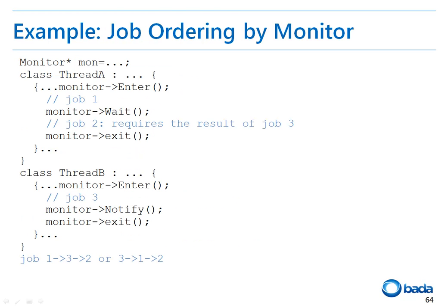This example shows you how to order jobs using the monitor. Thread A performs jobs 1 and 2 and thread B performs job 3. At this time, if job 2 in thread A is to be performed only after job 3 of thread B is performed, thread A can call the wait function for the monitor after the completion of job 1. The wait function waits and does not return until the notify function of thread B is called.